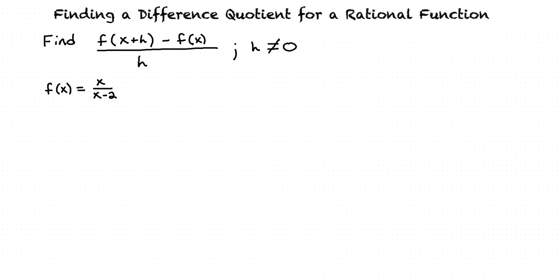Our first step is to solve for f of x plus h. The problem gives us f of x, but how do we solve for f of x plus h? That's a great question. We look at the function f of x, and everywhere there is an x in the function, we replace it with x plus h. This results in f of x plus h equals x plus h divided by x plus h minus 2.